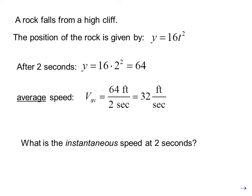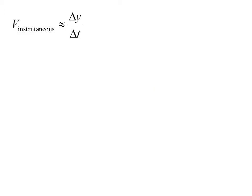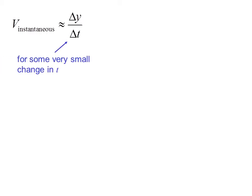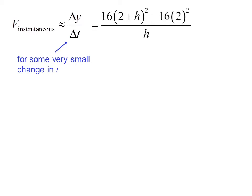What is the instantaneous speed at 2 seconds? Instantaneous velocity is approximately equal to delta y over delta t for some very small change in t. In this case we have 16 times (2 plus h) squared minus 16 times 2 squared, all divided by h, where h is some very small change in t.